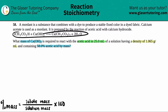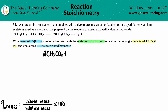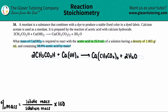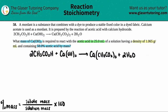I'm going to rewrite the equation. We have acetic acid combining with calcium hydroxide to yield calcium acetate and water. This is an acid-base reaction — acetic acid with calcium hydroxide, which is one of your strong bases.